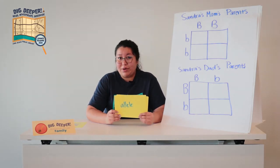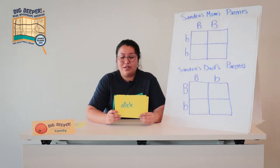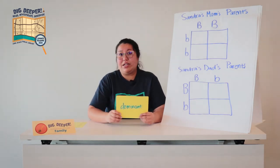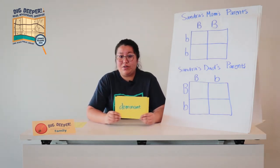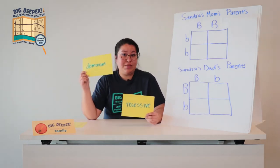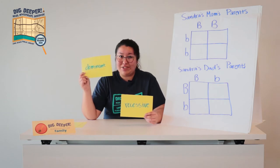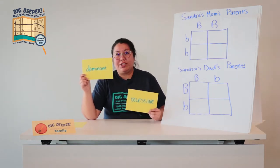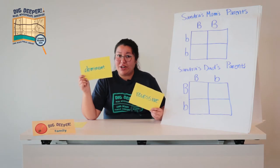You'll get one allele from your mom and one allele from your dad. These can either be dominant or recessive. A dominant allele is what will have more of a say as to what's going on, whereas a recessive allele — not so much.